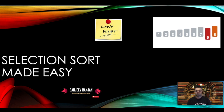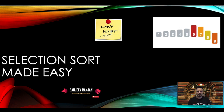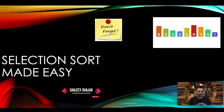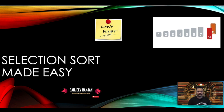It's called selection sort because we are selecting an element. There will be two parts — one is sorted and one is unsorted. We are selecting an element from the unsorted array, comparing with other elements, and placing the minimum value to the correct position. So the minimum element comes to the first position, the second minimum comes to the next position, and so on.